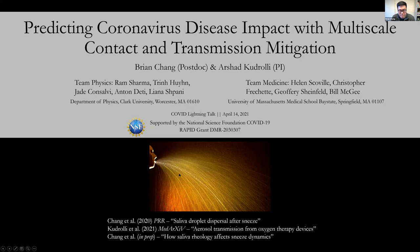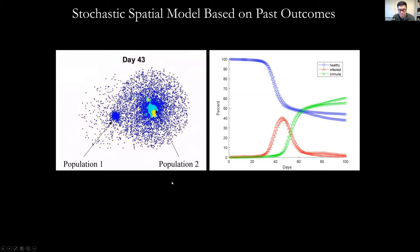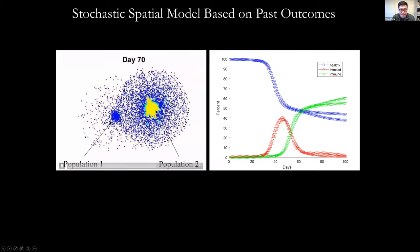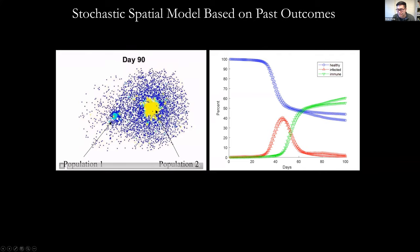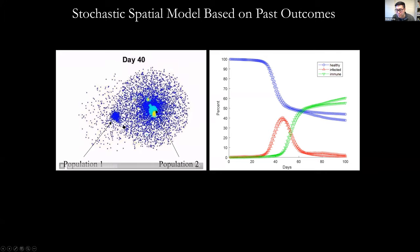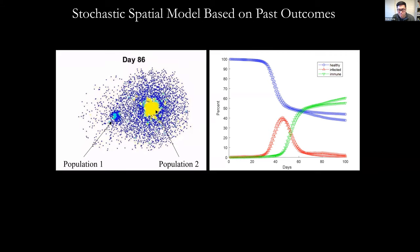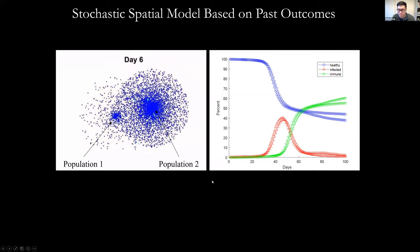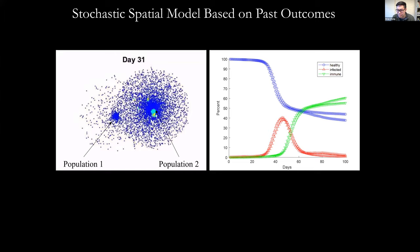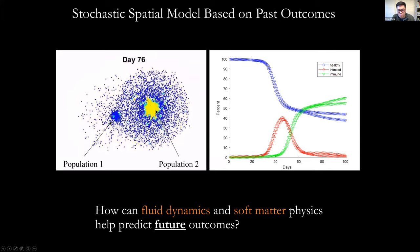In the image below, you can see our artificial sneeze with a long exposure, which we'll talk about more later on. The main point of this grant initially was to develop a stochastic model to predict how the coronavirus spreads between two different populations — for example, from Boston to Worcester, Massachusetts. As we were developing these models, we realized we could plug in pretty much any parameter to match how the coronavirus has spread based on past outcomes, which got us thinking about the underlying mechanisms and how fluid dynamics and soft matter physics could help predict future outcomes.